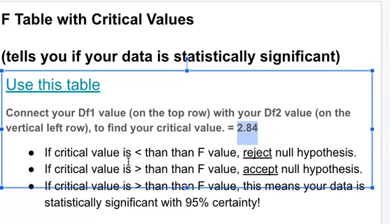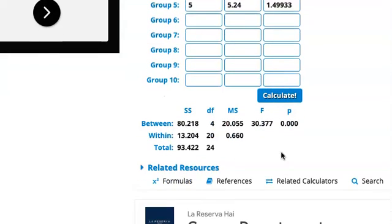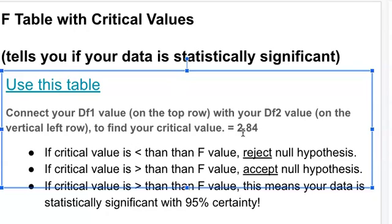Now, if your critical value is less than your F value, remember, our F value back from over here was 30.377. So if 2.84 is less than that 30.77 value, then you can reject your null hypothesis.